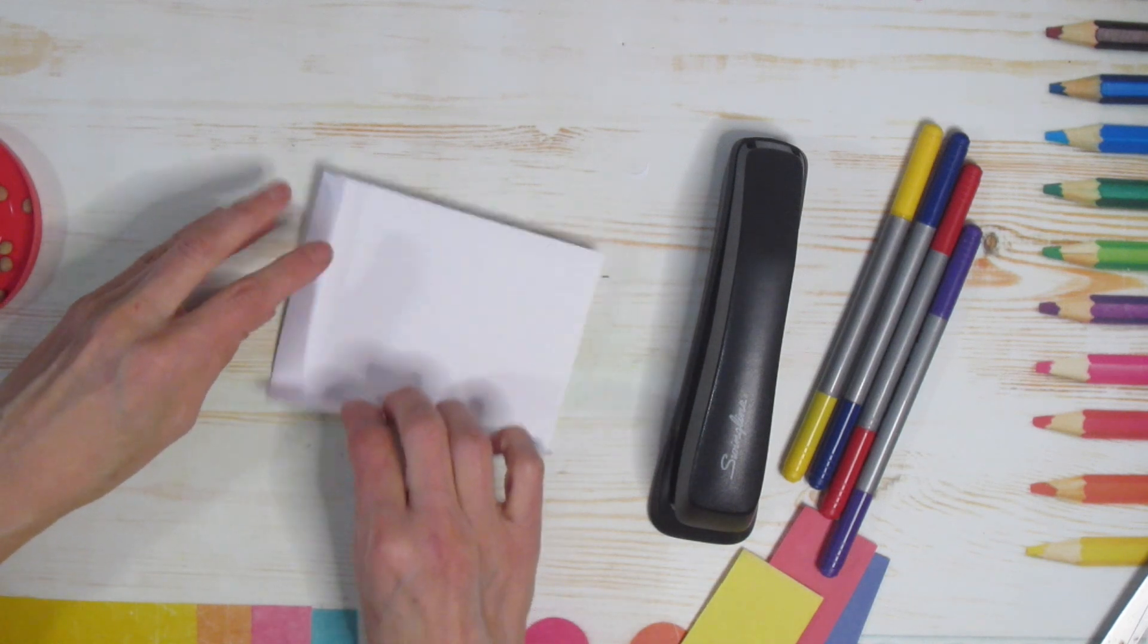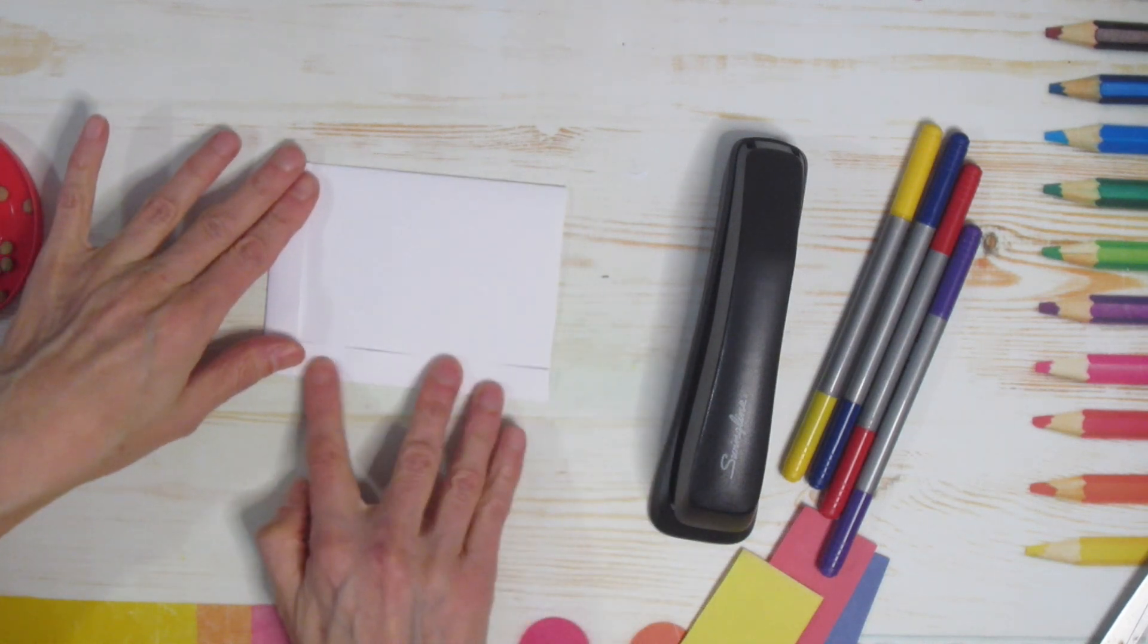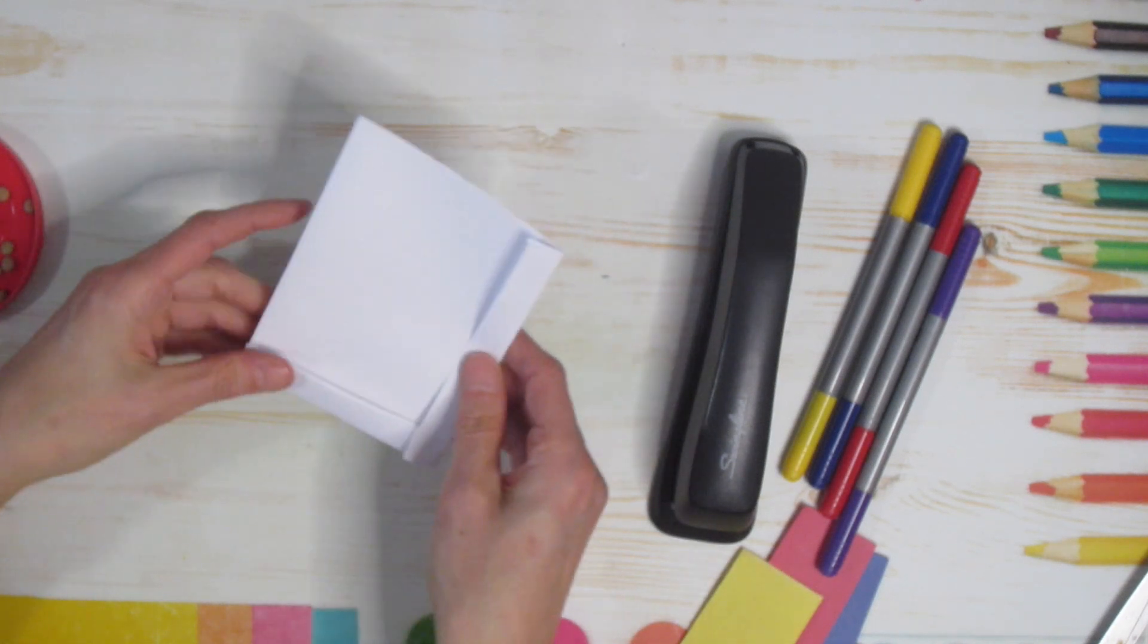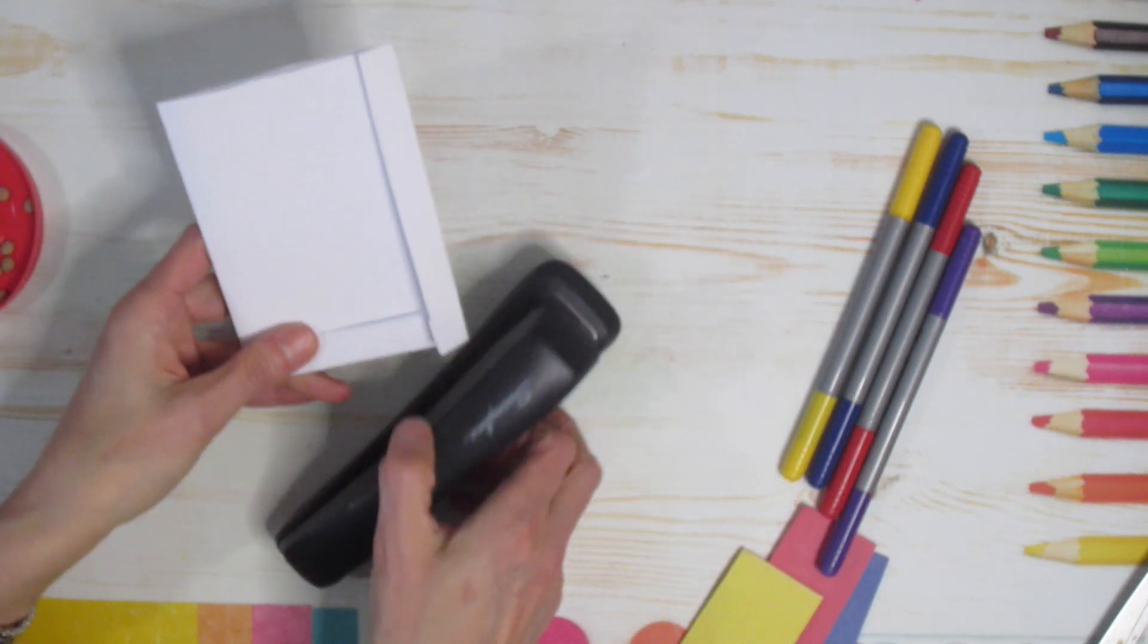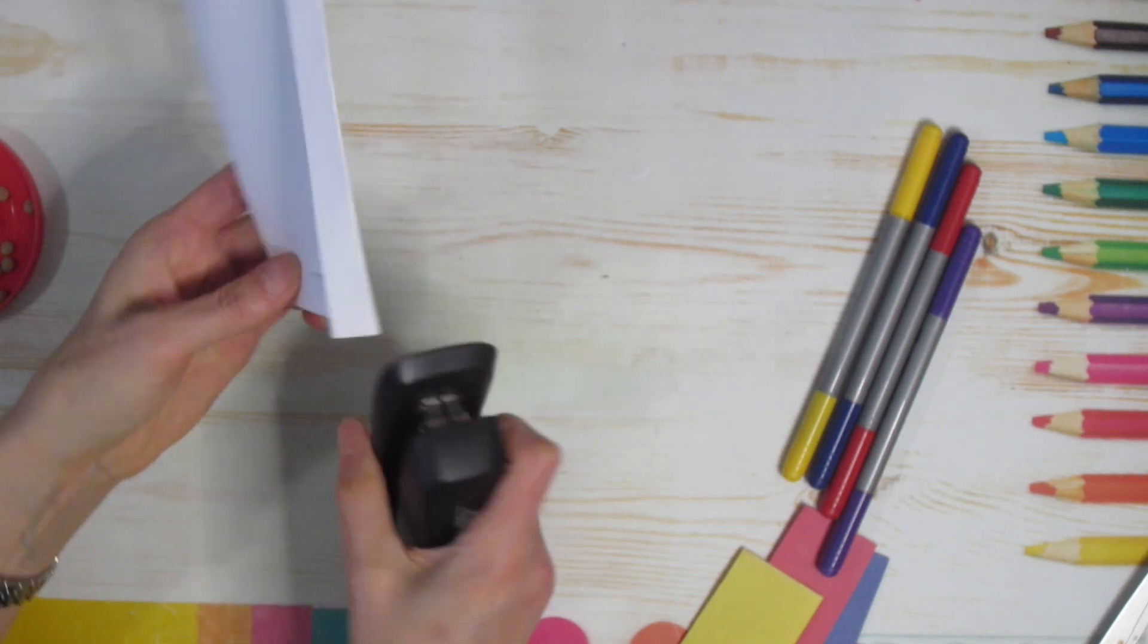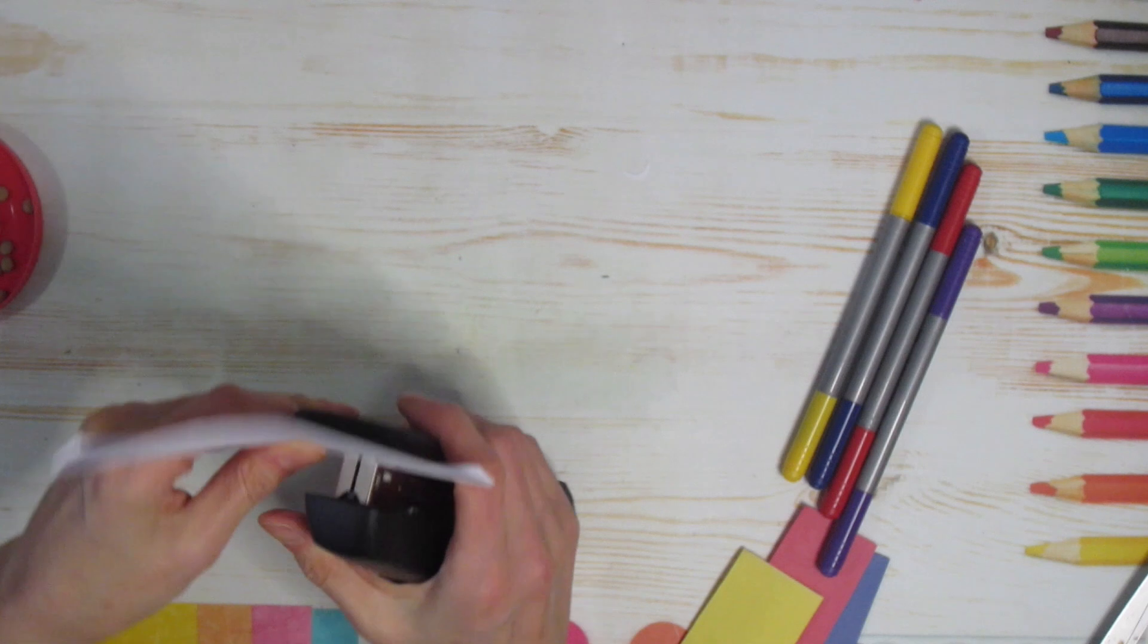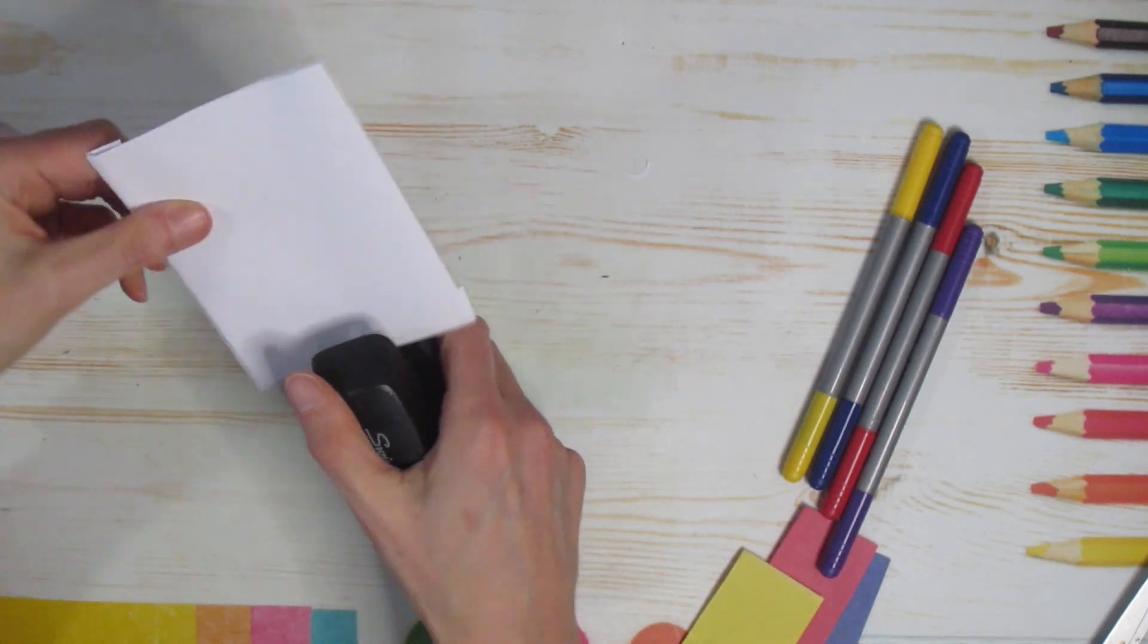you're gonna glue these down. So if you do not have a stapler, put a whole bunch of glue and go ahead and glue that down. If you do have a stapler, this is super simple, you just staple it. So I'm gonna put a staple there.